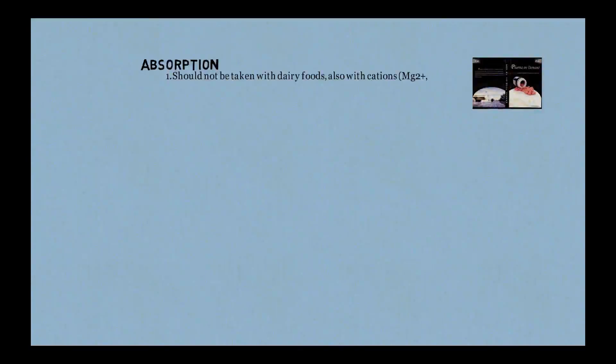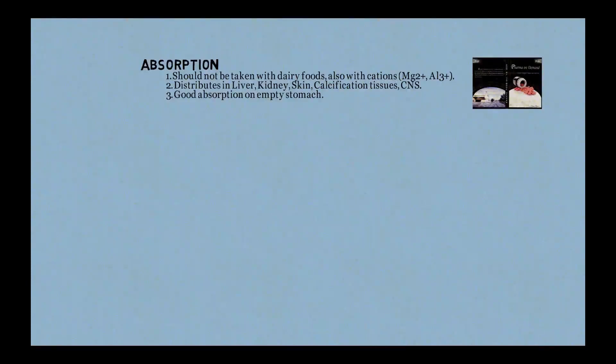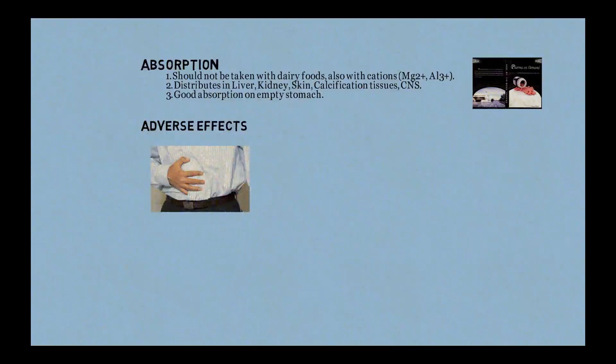For absorption, remember three key points: never take tetracycline with dairy foods or with cations like magnesium and aluminium, as these impair absorption. It should be taken on an empty stomach for best absorption. Distribution is mainly to the liver, kidney, skin, calcified tissues, and CNS.